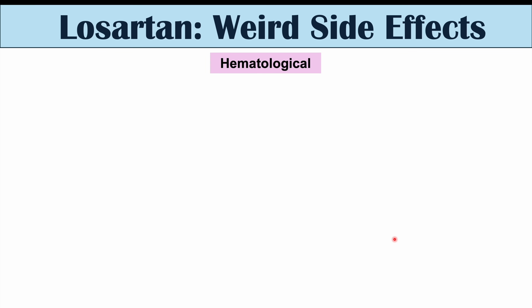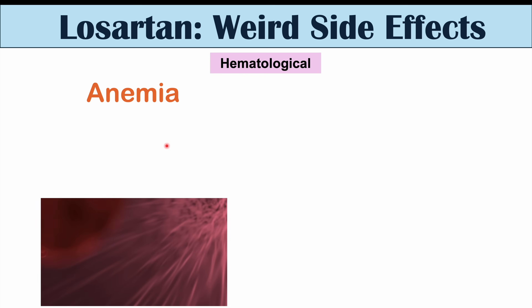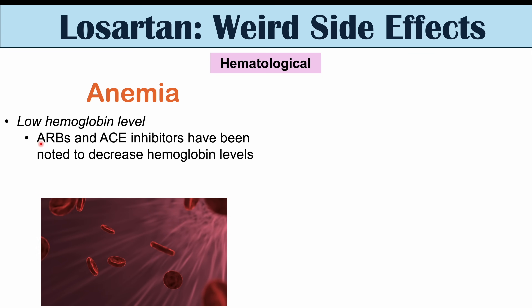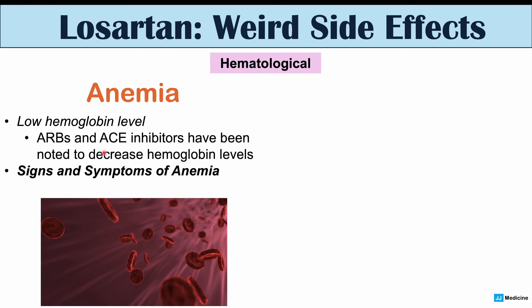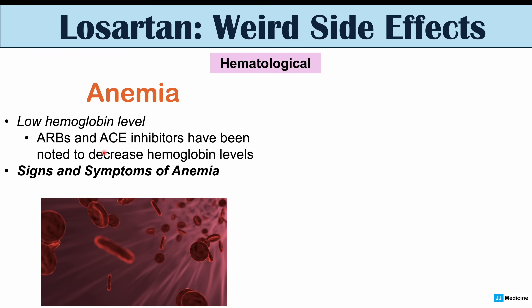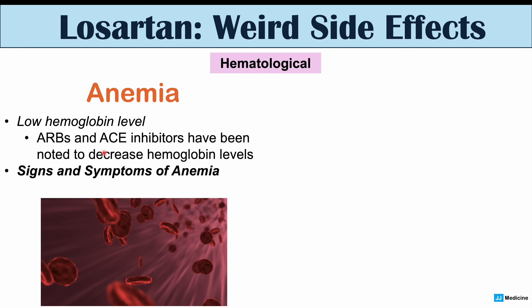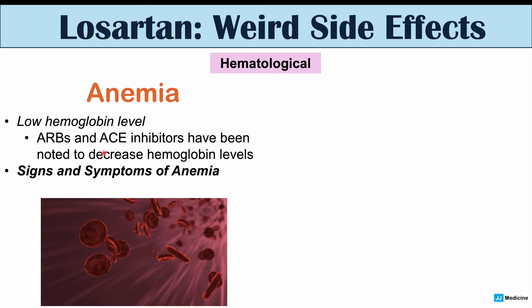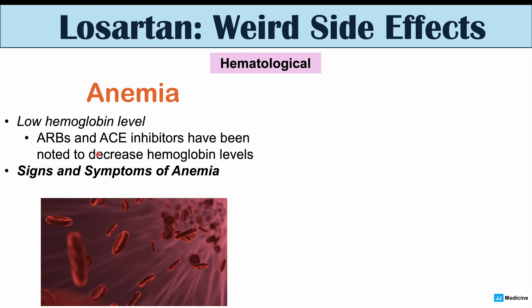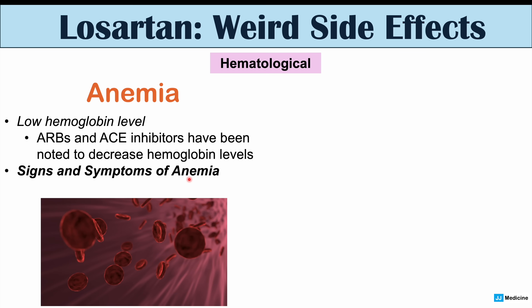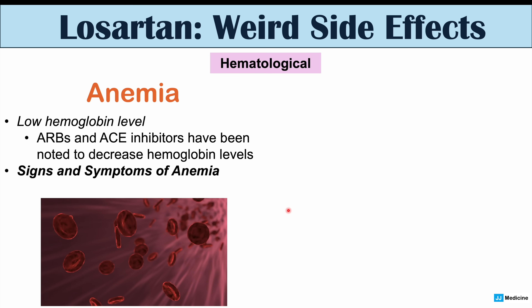Now let's talk about the weird side effects of Losartan, starting with hematological side effects — issues with the blood. One such side effect is anemia, which is a low hemoglobin level. ARBs like Losartan and ACE inhibitors have been shown to reduce hemoglobin levels, likely due to an effect on the kidneys. The kidneys release erythropoietin, a hormone that acts on the bone marrow to produce red blood cells. There may be an effect reducing erythropoietin release, increasing the chance of anemia — with symptoms including fatigue, pallor, and in more severe cases, shortness of breath.